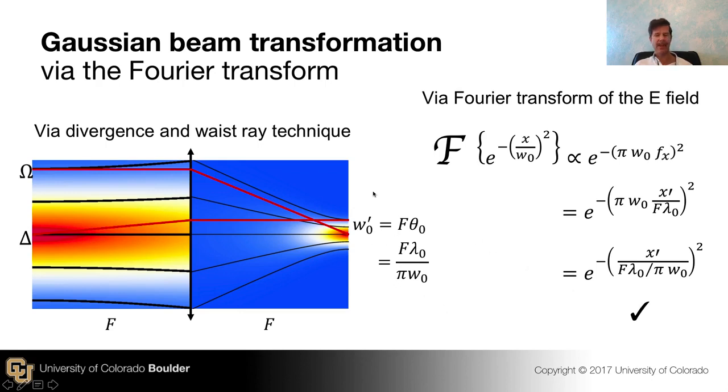Let's see if that works, given the proposal that this system can also be understood through a Fourier transform. So let's take the electric field in front of the lens. That's just e^(-(x/w0)^2). That's the initial waist squared. So that's my Gaussian field right along there. And let's take its Fourier transform.